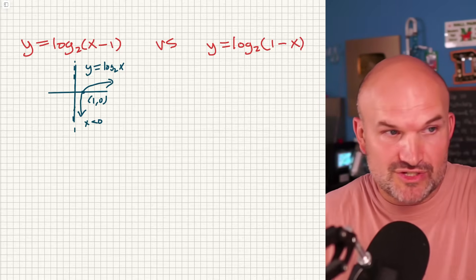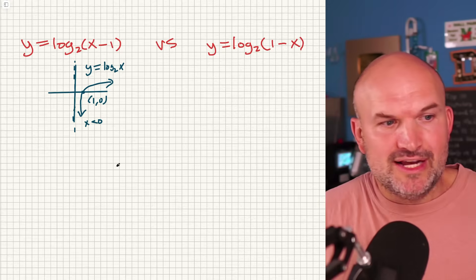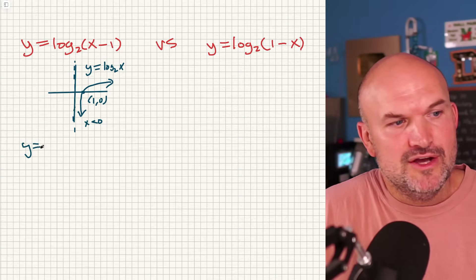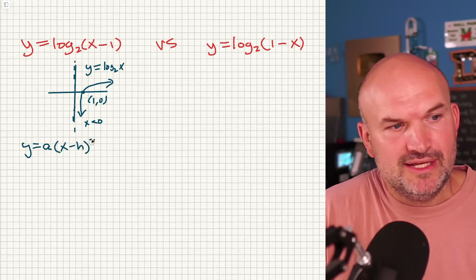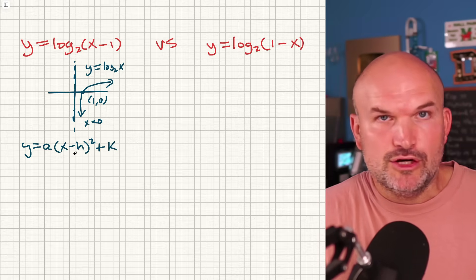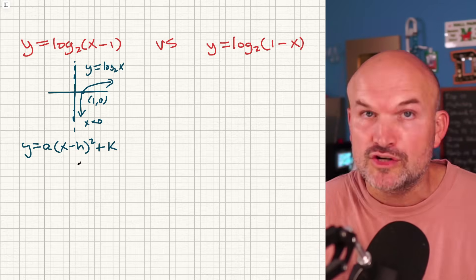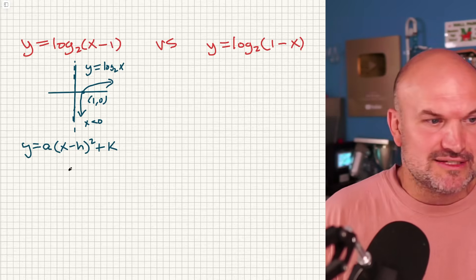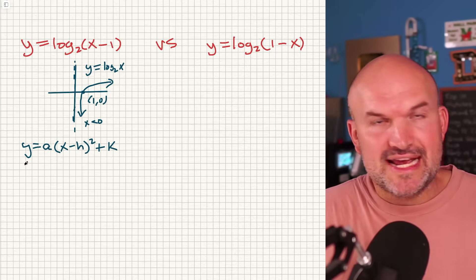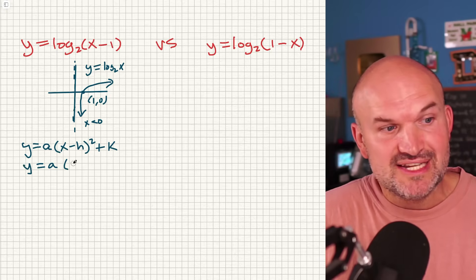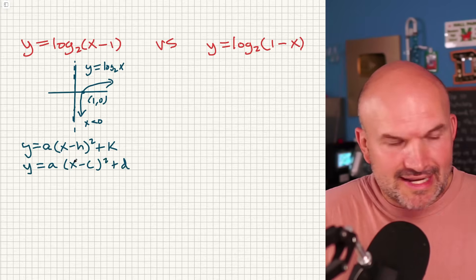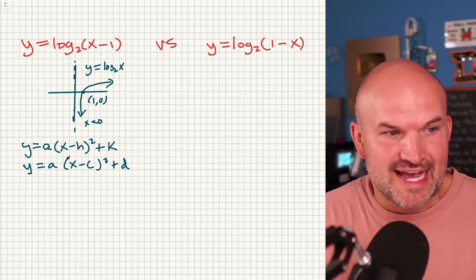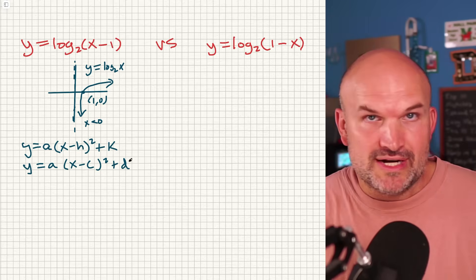Obviously, if we have horizontal shifts — which in this example we do — I know that from my transformations with quadratics. When we first learned about quadratics with transformations, we looked at vertex form, where h and k represent the vertex. We can also use c and d as letters for transformations of functions, which is a bit more common. Let h and k represent the same thing as c and d.